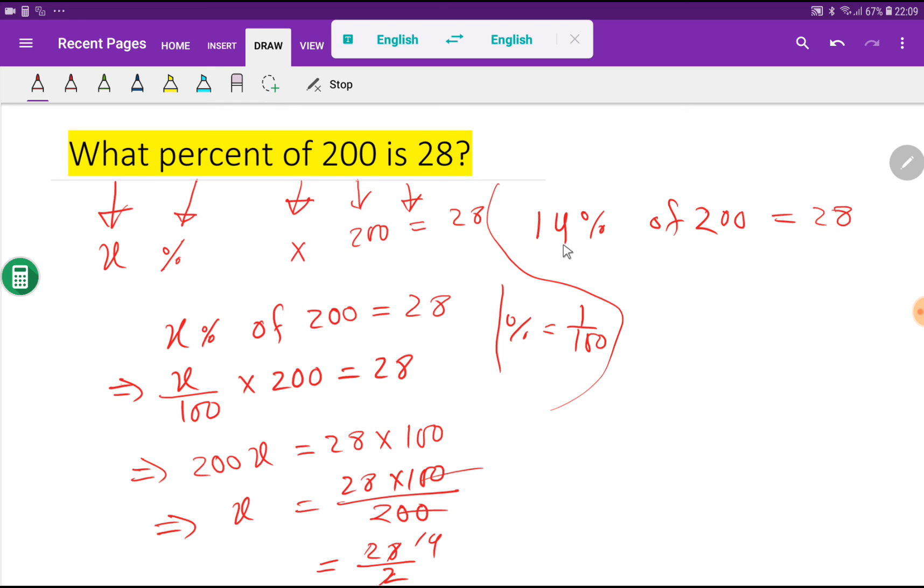Let me prove. 14 means 14 divided by 100 times 200. So we are getting here 28. Look at here.